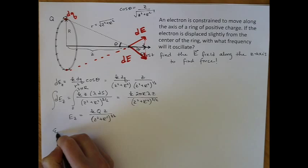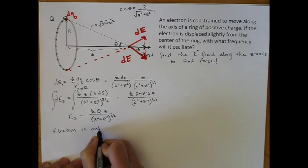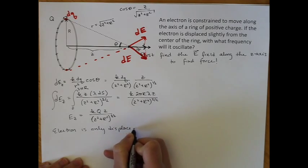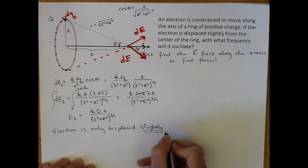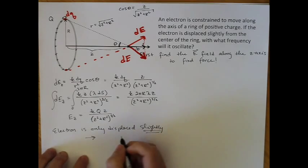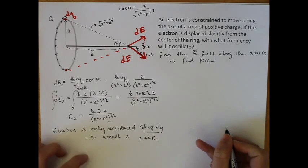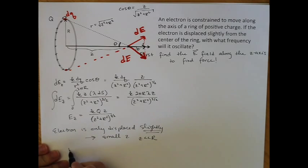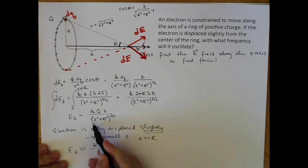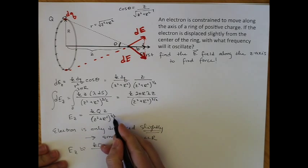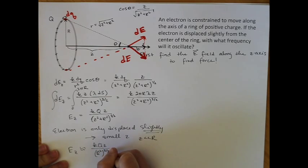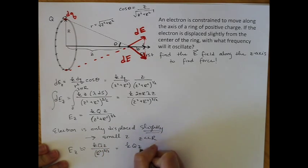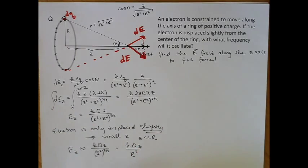So if the electron is only displaced slightly, that means that we have a small value of z, or z is a lot less than R. So if z is a lot less than R, then I can Taylor expand this and show that E_z is about equal to kqz over R cubed, close to the ring.